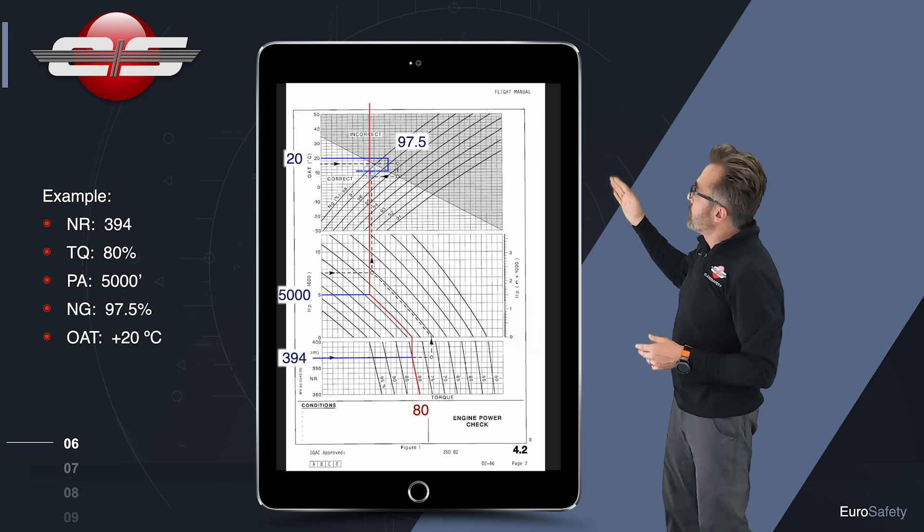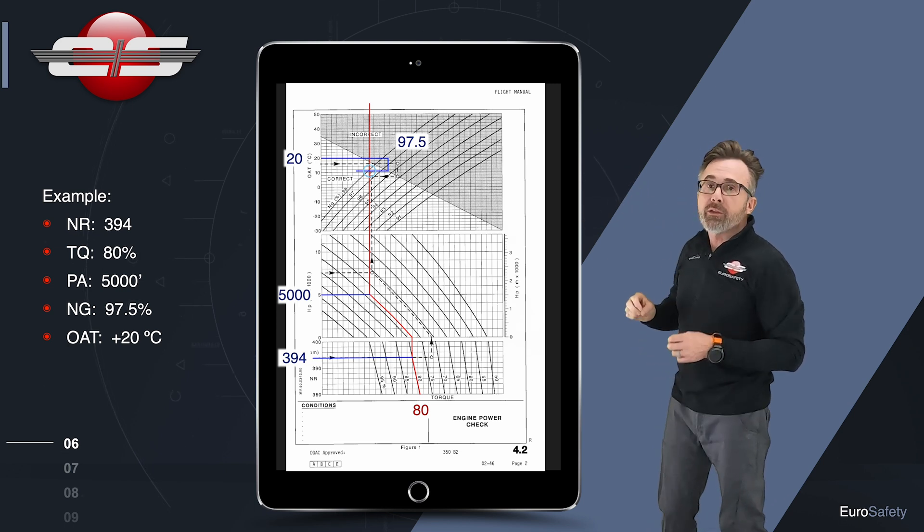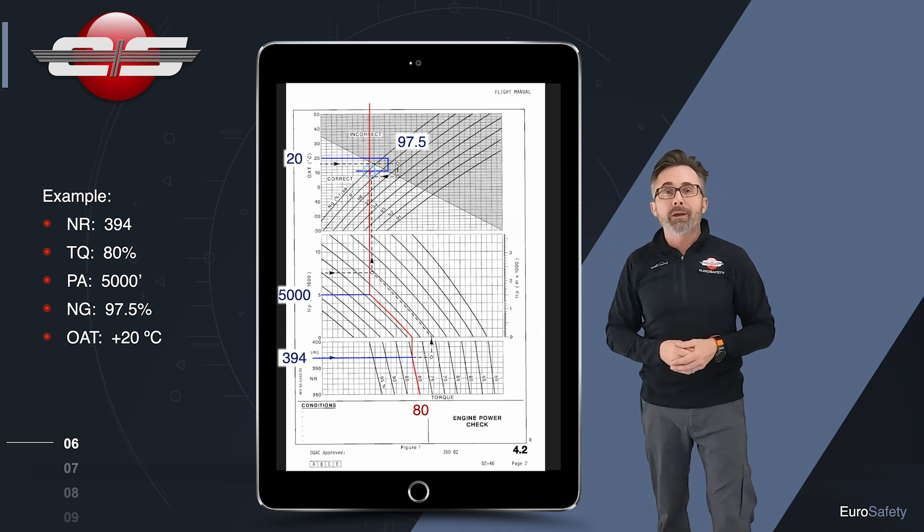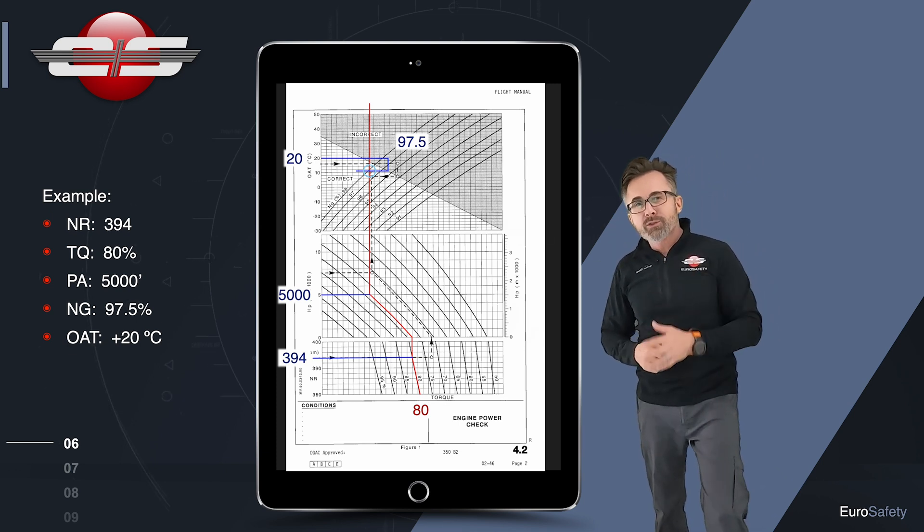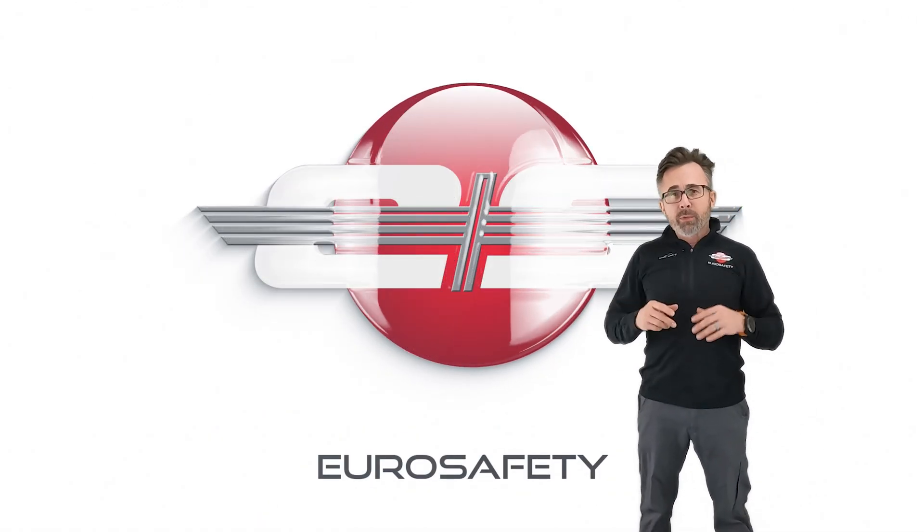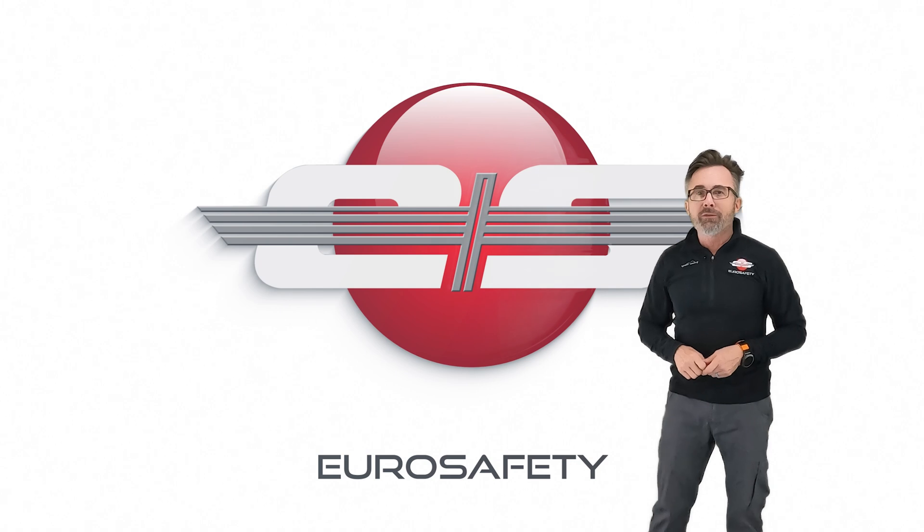And if it falls on the non-shaded side, the power check is good, and if it's on the shaded side, the power check is bad. I hope that answers any questions you have on the power check chart for the B2 aircraft and below, and we'll see you at the next EuroSafety tutorial.